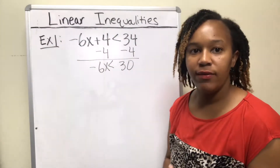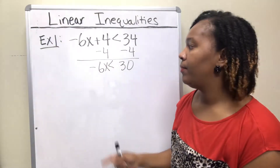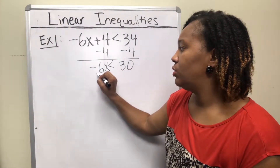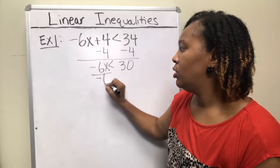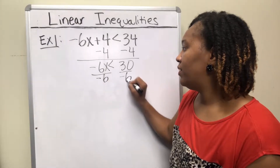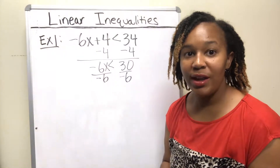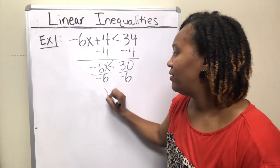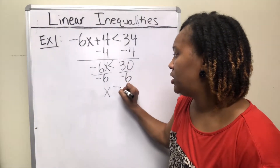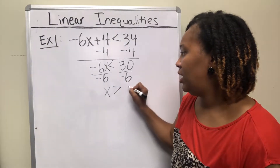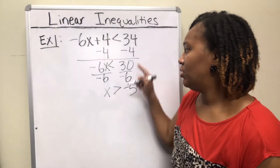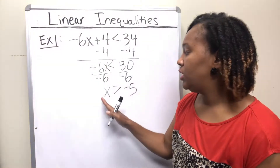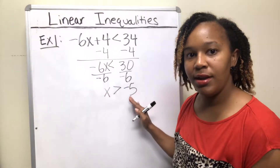In this case, we subtracted 4, so we didn't multiply or divide. Now to get rid of the negative 6 — that's negative 6 times x — you do the opposite of multiplication, which is division. So we're dividing by negative 6. We actually divided by a negative number, so we have to change the direction of the inequality symbol. 30 divided by negative 6 is negative 5, so this reads x is greater than negative 5.